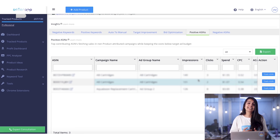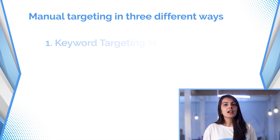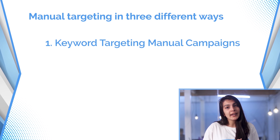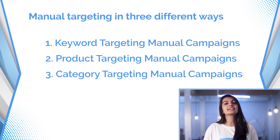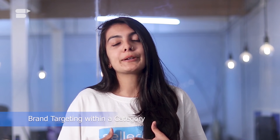Now comes the main part — let's talk about how to set up manual campaigns to advertise on your competitors' listings. The three ways to go about it are: keyword targeting manual campaigns, product targeting manual campaigns, and category targeting manual campaigns. Pick the top-performing ASINs for your primary keywords, make them into a list, and import this list into your manual ASIN targeting campaign to advertise on your competitors' listings.